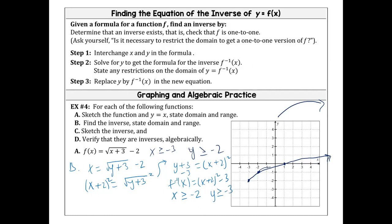For our inverse, those roles switch. So the domain for our inverse is x greater than or equal to negative two, and the range is y greater than or equal to negative three. To graph the inverse easily, just flip the points: negative three, negative two becomes negative two, negative three; negative two, negative one becomes negative one, negative two; and one, zero becomes zero, one.